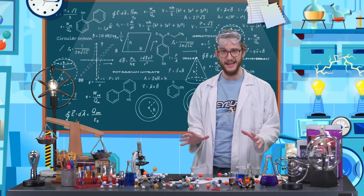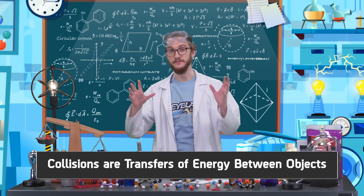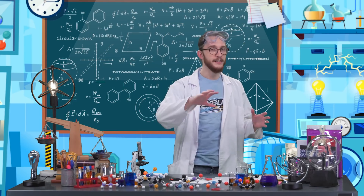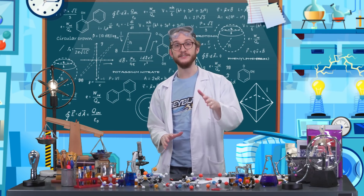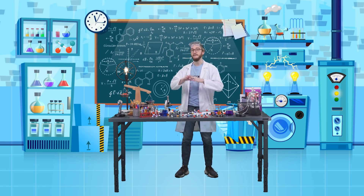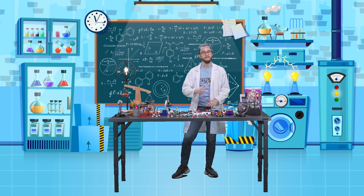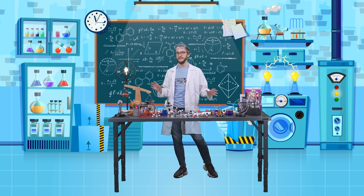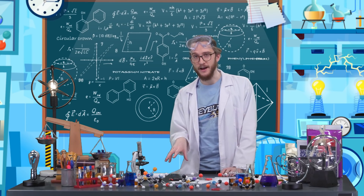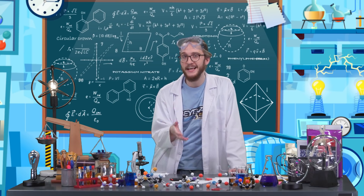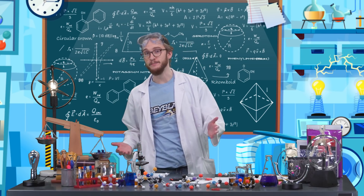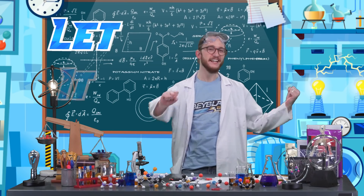So what did we learn today? Collisions are transfers of energy between objects. More energy being transferred means a bigger collision, and a key component of this energy is momentum. Momentum is made of mass and velocity, so our heavier and faster Beyblade will have more momentum and therefore bigger collisions when battling. That's it for Basically Science for now. I hope you all keep investigating and learning while you're eating, breathing, walking, and even blading. Be good to each other and keep on letting it rip!